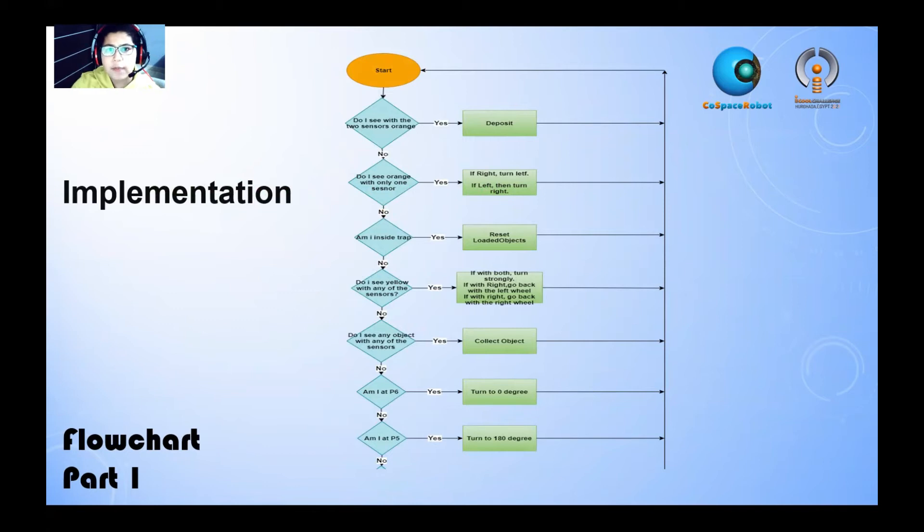Am I inside the trap? If yes, reset the loaded object. If no, do I see yellow with any one of the sensors? If yes, and if I see with both, I turn strongly. If I see with right, I go back with the left wheel. If I see with left, I go back with the right wheel. If no, do I see objects with any of the sensors? If yes, I collect the object. If no,